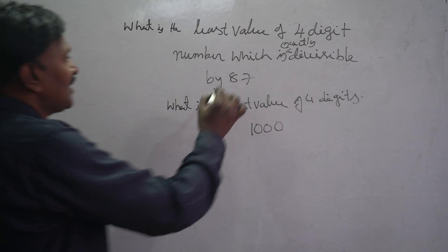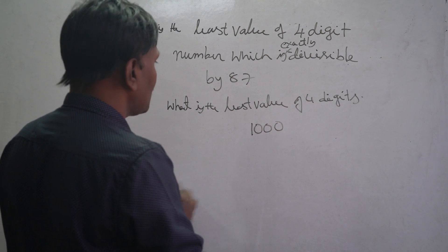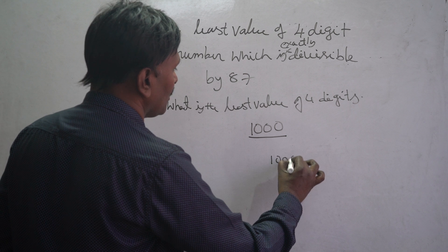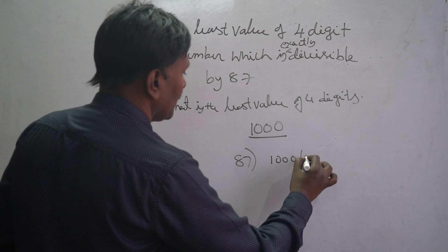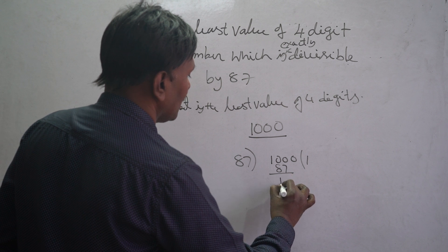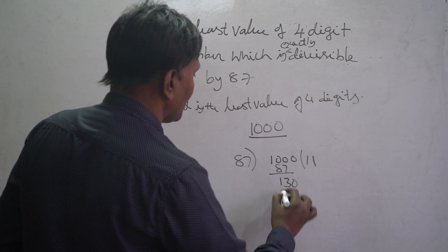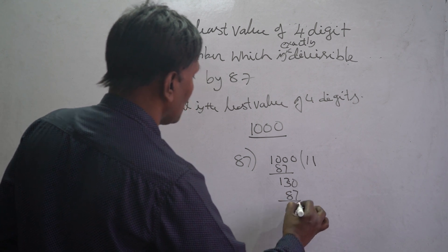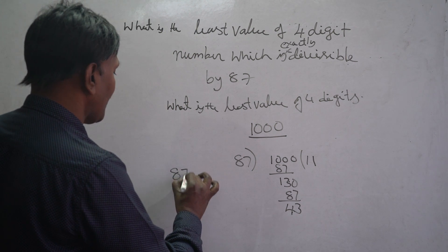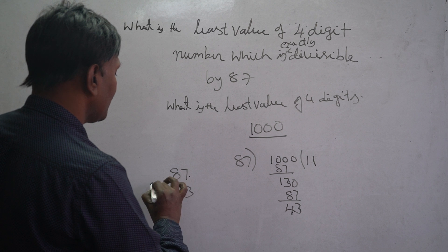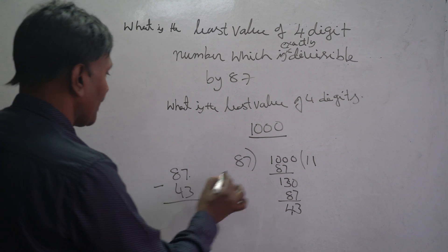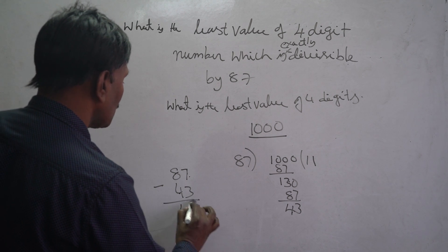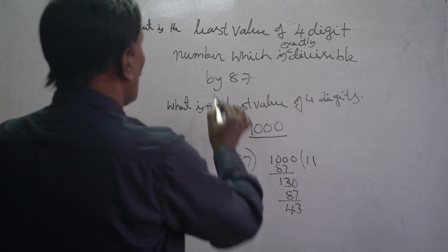1000 is not exactly divisible by 87, so we have to divide this number by 87. 87 once is 87. The remainder works out: 87 into 13 is 87, and computing the steps gives us a remainder of 43.